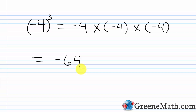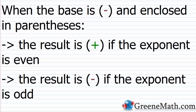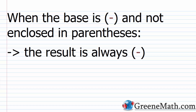Here are the rules to remember when working with exponents and negative bases. When the base is negative and enclosed in parentheses, the result is positive if the exponent is even — because you have an even number of negative factors, which gives a positive result. The result is negative if the exponent is odd — because an odd number of negative factors gives a negative result. When the base is negative and not enclosed in parentheses, the result is always negative, regardless of the exponent, because you're just saying you want the opposite of what's being calculated.